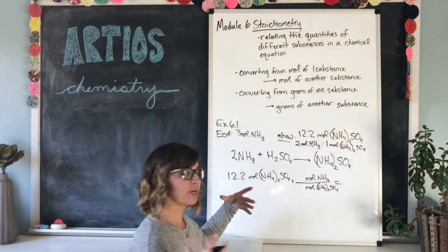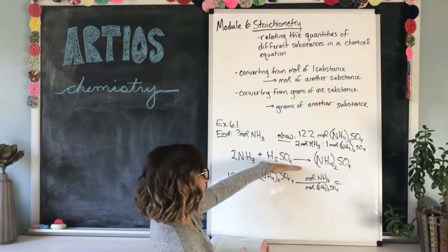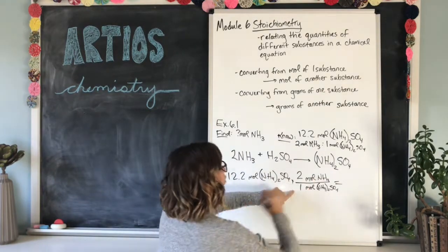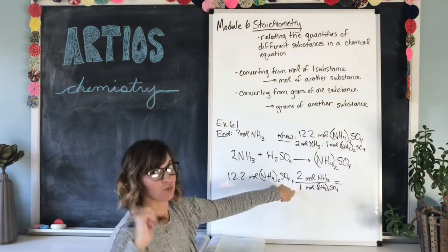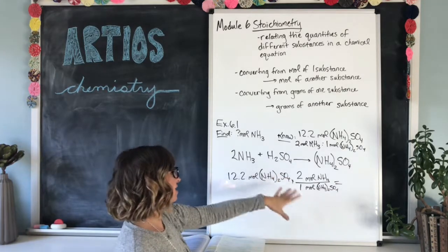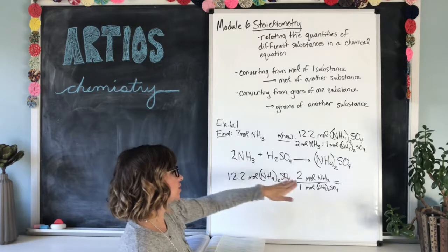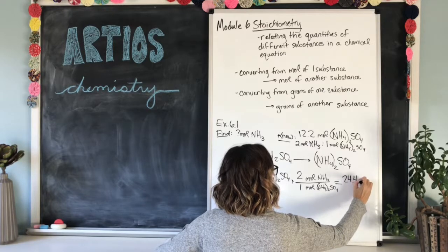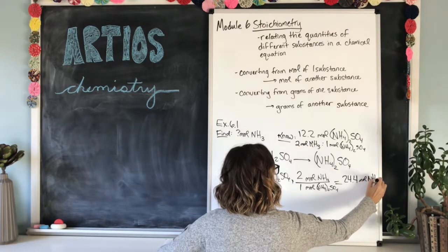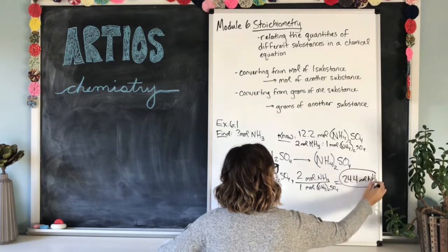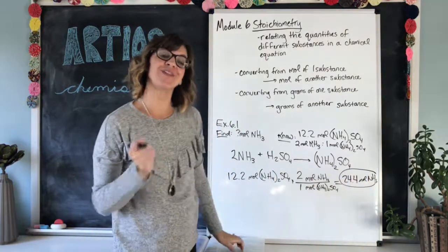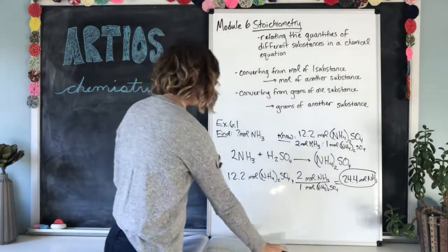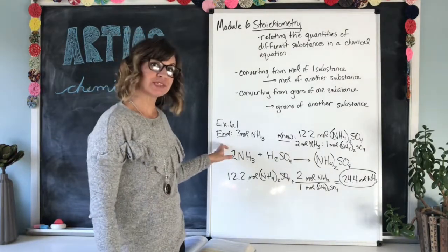And now we have to plug in that ratio. And we know from the chemical equation that for every two moles of NH3, there can be one mole of NH4, two SO4 produced. So that's how we set it up. And then we just multiply across. So it'd be 12.2 times two. The answer would be 24.4 moles of NH3. And circle our answer to make it easy for your favorite chemistry teacher to find your answer when you're working on a test or something. So that is the answer for example 6.1.